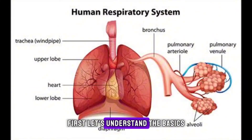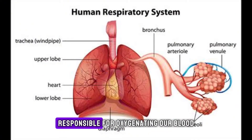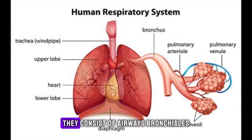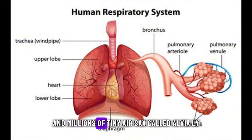First, let's understand the basics. Our lungs are vital organs responsible for oxygenating our blood. They consist of airways, bronchioles, and millions of tiny air sacs called alveoli.